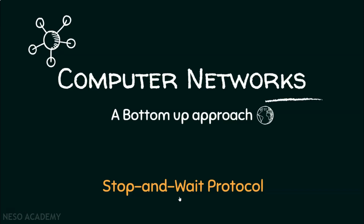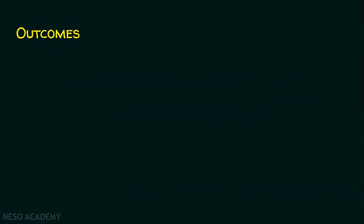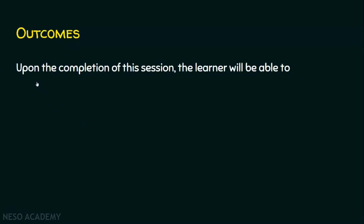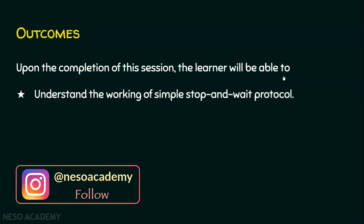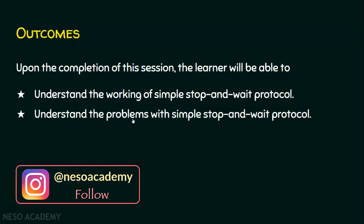Let's see the first flow control protocol: the stop and wait protocol. We will start this session with the outcomes. In today's lecture, we have two outcomes. Upon the completion of this session, the learner will be able to: outcome number one, understand the working of simple stop and wait protocol; and outcome number two, understand the problems with the stop and wait protocol.